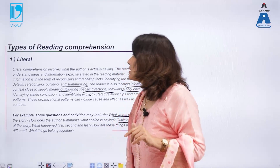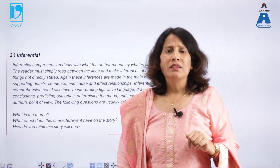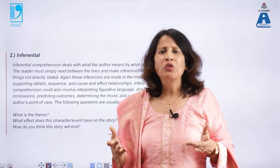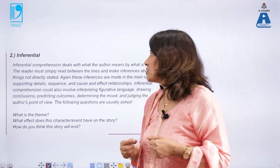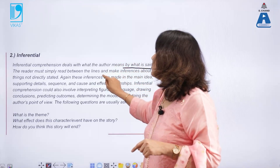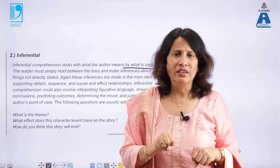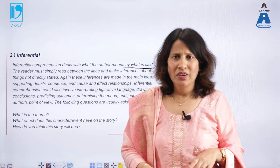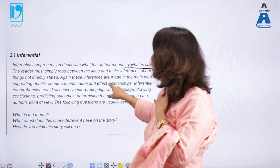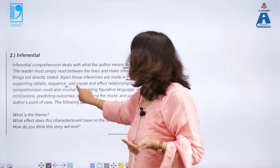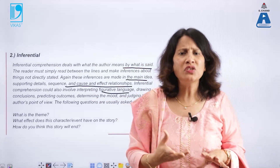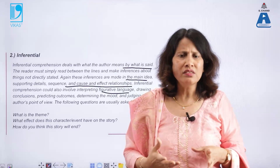The second kind is inferential comprehension, which means taking out inferences. Something may not be clearly stated in the passage, but you have to draw hints and inferences from it. It deals with what the author means by what is said — you have to read between the lines carefully, possibly going back to re-read. Inferences are made from main idea, supporting details, sequence, cause and effect relationships, figurative language, literary devices, drawing conclusions, predicting outcomes, determining mood, and judging the author's point of view.